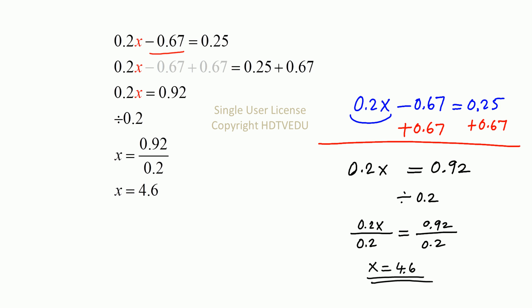0.2x minus 0.67 is equal to 0.25. Add 0.67 to both sides and what do we get? 0.2x equals 0.92. Divide both sides by 0.2 and we get x equals 4.6.